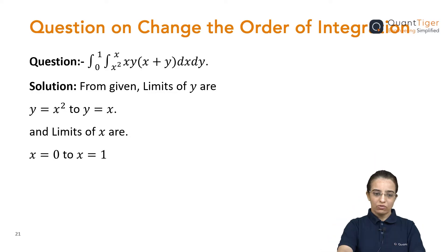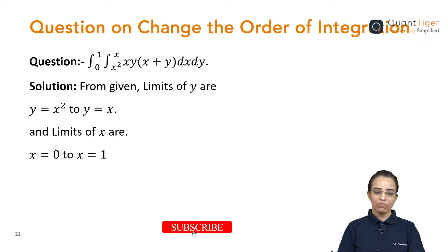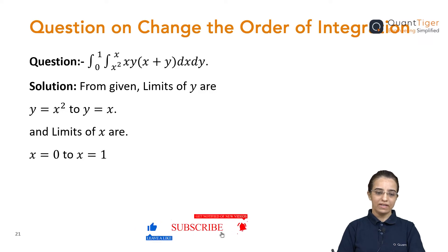Hello everyone. So, let us solve a question. We have a question where the earlier limit is 0 to 1. Then the second limit is x square to x, and the integrand is xy into (x plus y) dx dy.